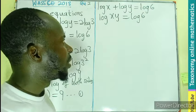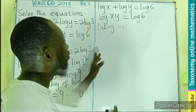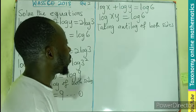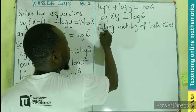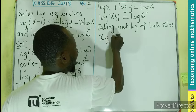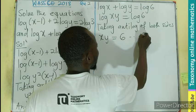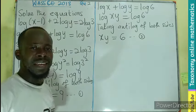Single logarithm at both sides. So we take anti-log of both sides. If we take anti-log of both sides, the logarithm cancel. So we are left with only xy = 6. That becomes our second equation.